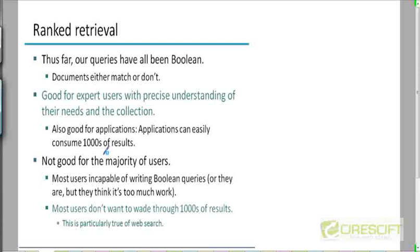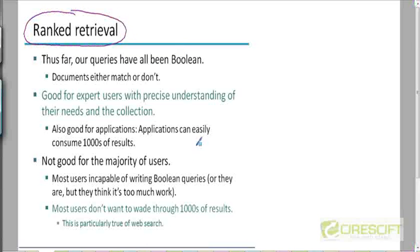Now in Chapter 6, we are going to move to Ranked Retrieval and look at a model for Information Retrieval that is going to be different from the Boolean Retrieval model that we have been considering so far. The new model is called Ranked Retrieval, and this is a model that's closer to what real world search engines use because in the Boolean Retrieval model, the semantics of a Boolean query was such that either a document matches the query or it doesn't match the query.